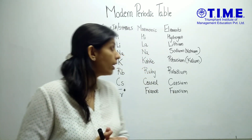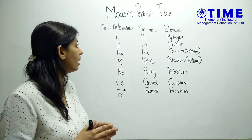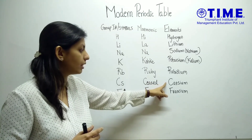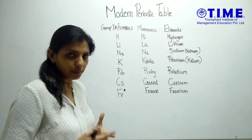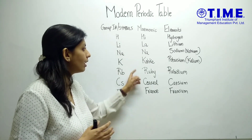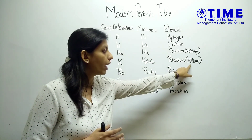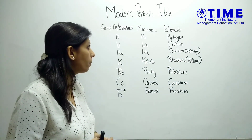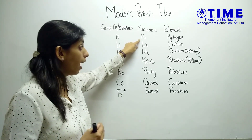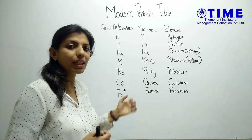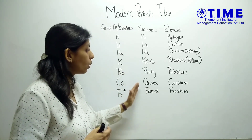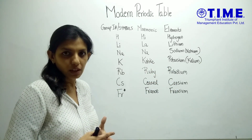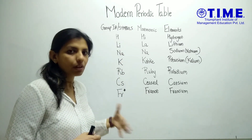In Group 1, you have the elements hydrogen, lithium, sodium, potassium, rubidium, cesium and francium. The funny mnemonic to remember these goes with the symbols or Latin names of the elements: 'Hyla Na kehke Ruby seized France.' You can pause the video, write this down, and your Group 1 is done.